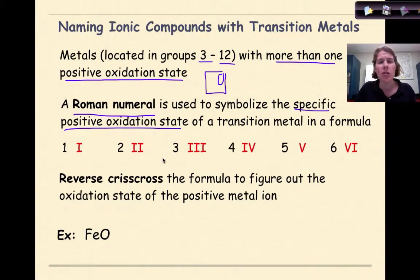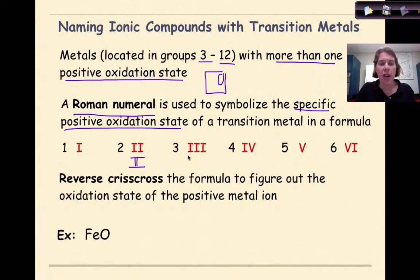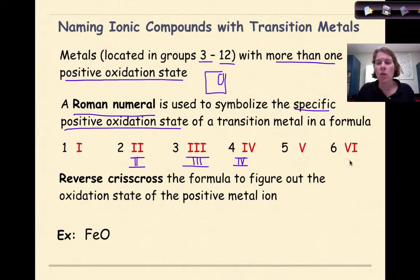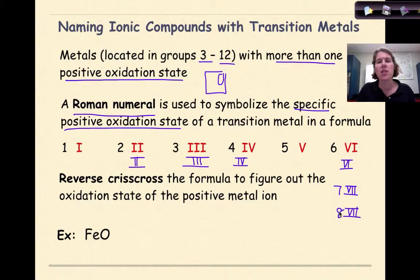Roman numeral 1 is represented as a capital I; 2 is two I's (II); 3 is three I's (III); 4 is IV; 5 is a capital V; 6 is VI — basically moving the I from the left side to the right side of V. For 7 you get VII, and 8 is VIII. I've never seen a Roman numeral 9 or 10 needed, so we'll stop at 8.